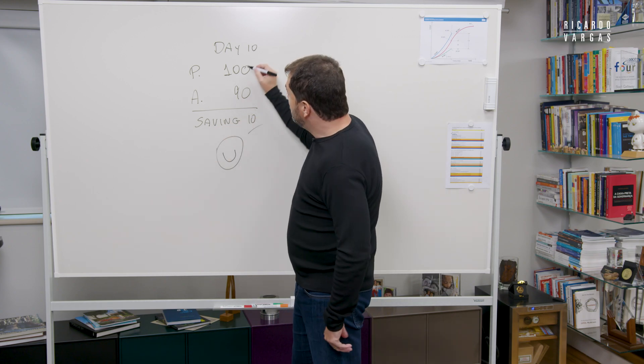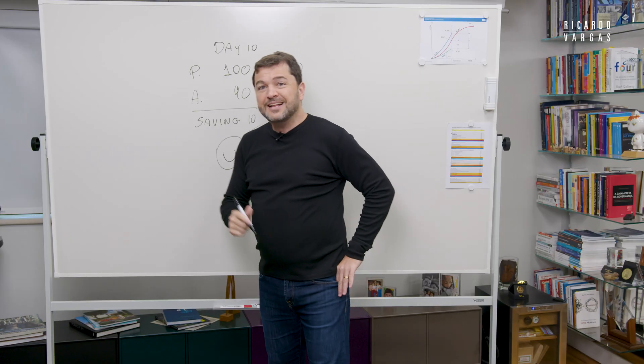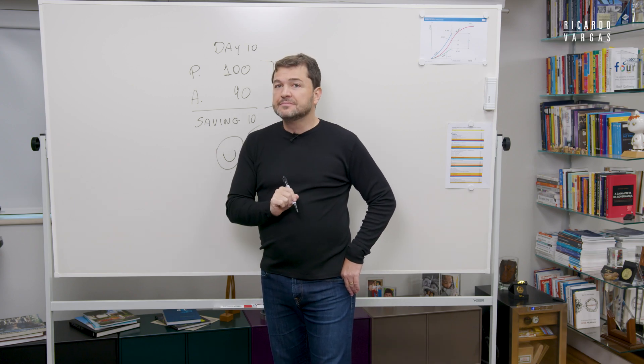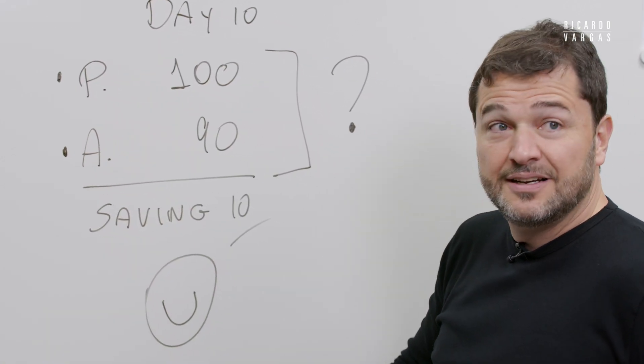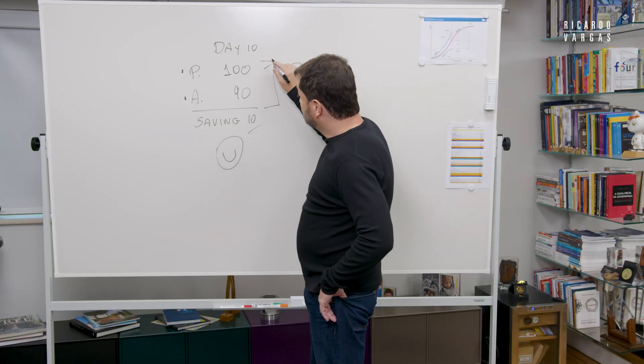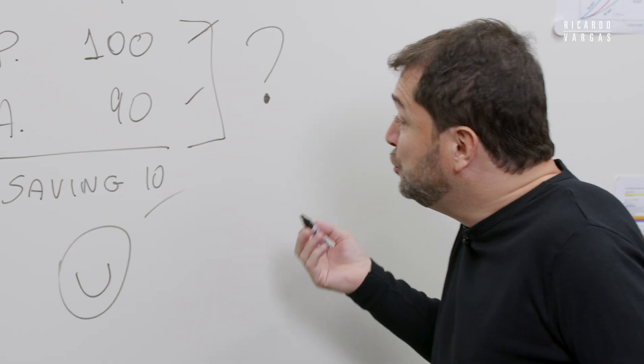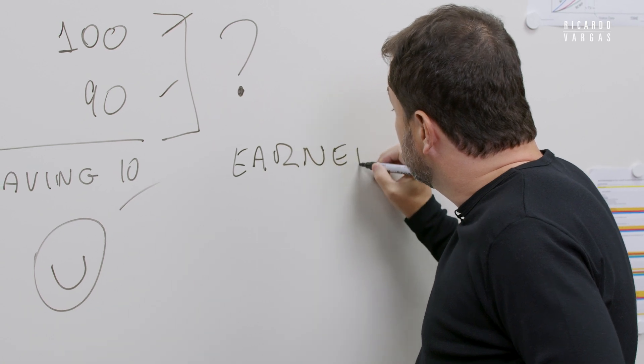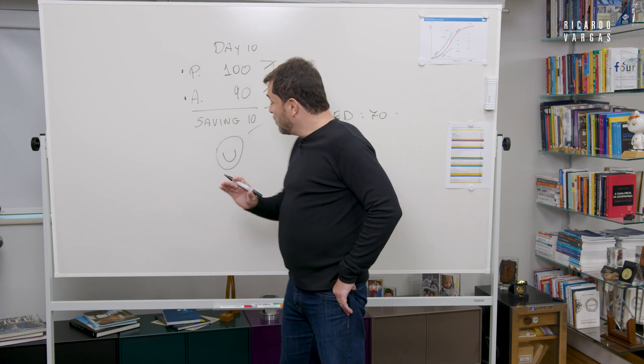But when we see this, there is a big, big question. This is absolutely true if you are producing the same thing here and here. Because let's suppose that you're planning to spend $100, you spend $90, but produce something that is earned only $70. I will explain more about this.